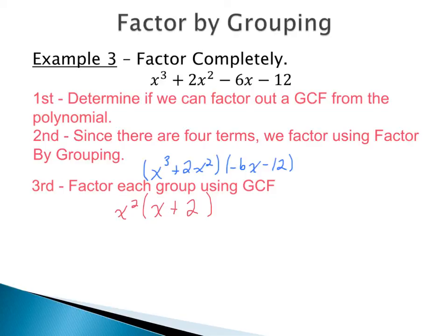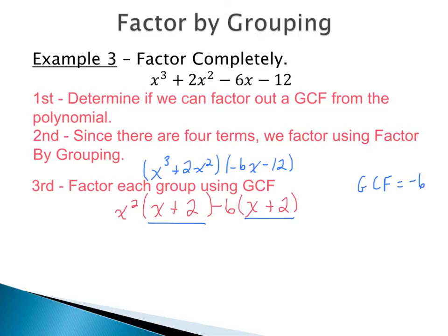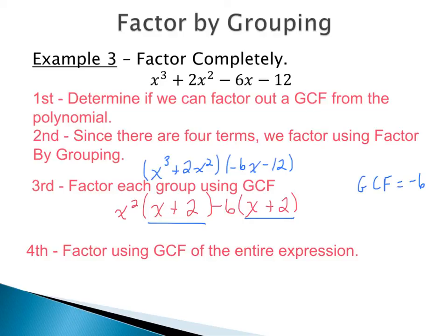For the right group, negative 6x minus 12, the GCF between 6 and 12 is 6. Since the first term is negative, we make the GCF negative 6. Dividing each term by negative 6: negative 6x divided by negative 6 is positive x, and negative 12 divided by negative 6 is positive 2. This gives negative 6 times the quantity x plus 2. Both groups now share the common binomial factor x plus 2.